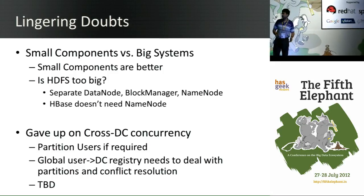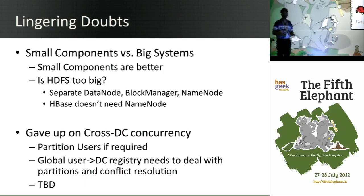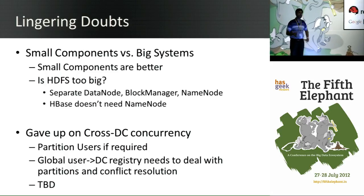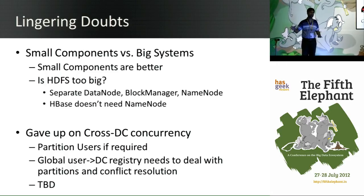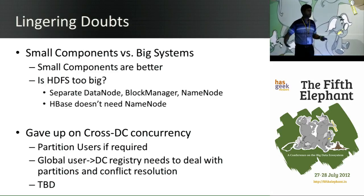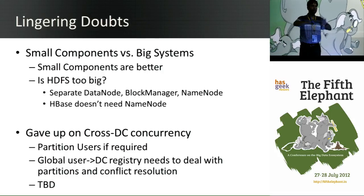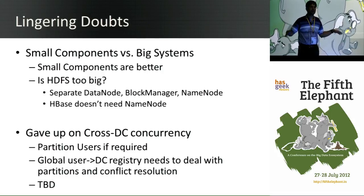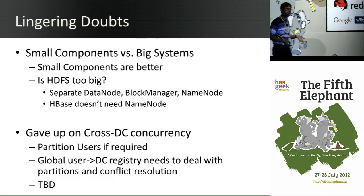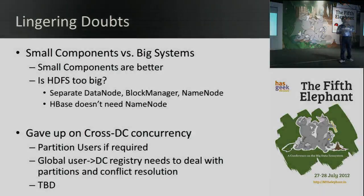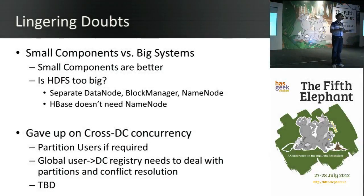We couldn't quite cover the cross-data-center concurrency case — we gave up on concurrent updates and punted on it. In the future, if we really want to set up a data center in Europe where European users have their data in Europe, what we'd do is federate users: these users go to US, these go to Europe, and maintain a global registry mapping users to continents or data centers. Then the question becomes: who maintains this global registry and how do you deal with concurrent updates? But our gut feel was that's a much simpler problem — much smaller amount of data, updates are very infrequent, and the updates are an optimization. If European users keep hitting an American data center, it's not a big deal. We could do globally consistent writes at leisure.